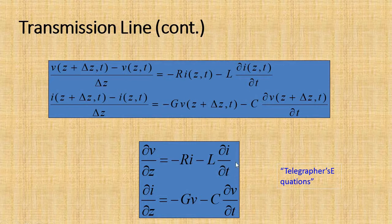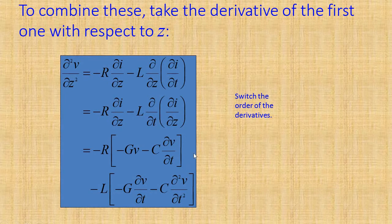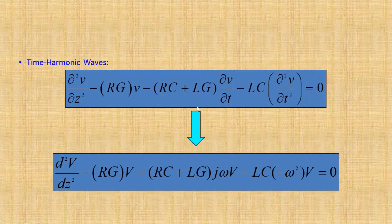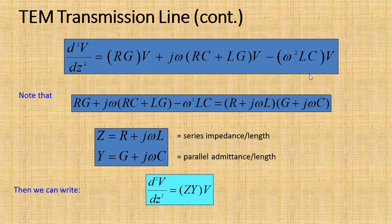Now, differentiating the third equation dV/dz with respect to Z, we get a second-order differential equation. After differentiating, we obtain two equations — one for voltage and one for current. These represent time-harmonic waves. We know from basic maths that d/dt equals jω, and ∂²/∂t² equals minus ω². Replacing these in both equations gives us the final homogeneous linear differential equations.